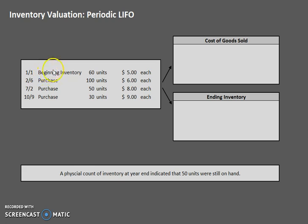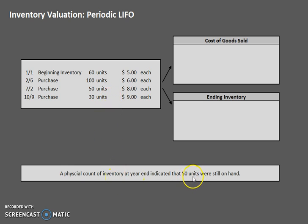We have a series of beginning inventory and purchases during the year. We purchased 60 units and paid $5 each for them, 100 units paid $6 each, and so on and so forth. A count at the end of the year revealed that 50 of these units are still on hand at the end of the year, which means that all of the others had been sold.